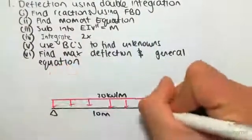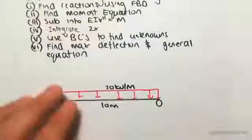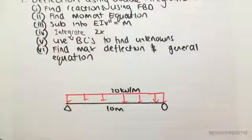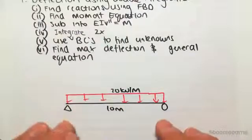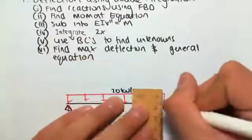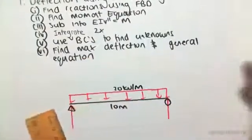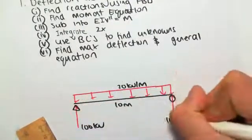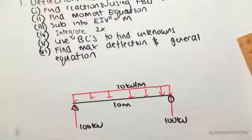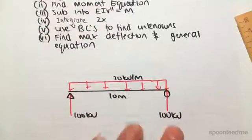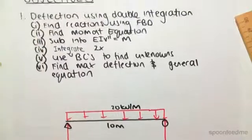The first thing you want to do is find the reactions using a free body diagram. Very simply, you would see there's 20 by 10 equals 200 kilonewtons. It's obviously going to be symmetrical, so we're going to get 100 kilonewtons each. For a more complex beam you might have to do a proper free body diagram and solve for equilibrium, but this one's very simple.